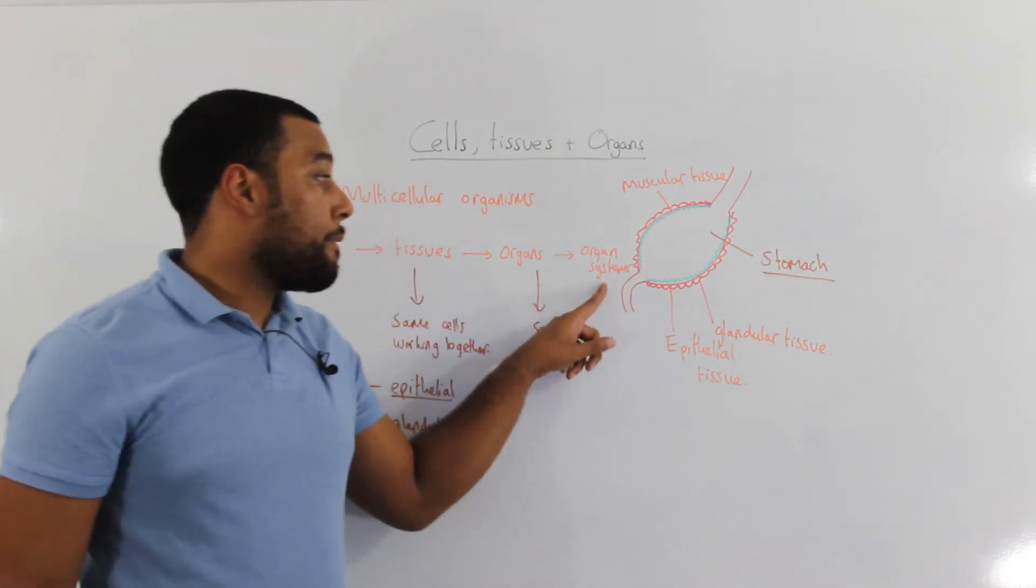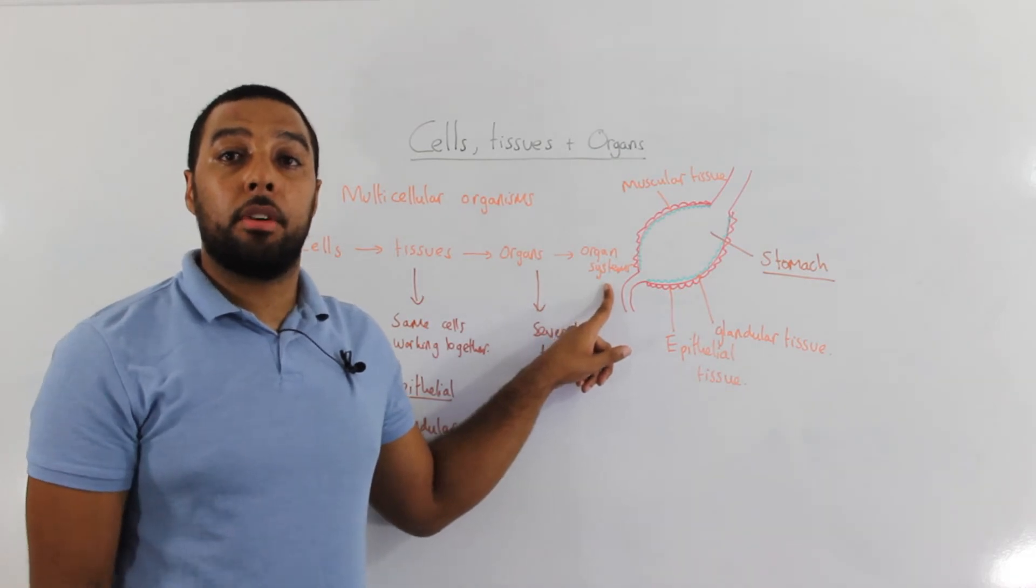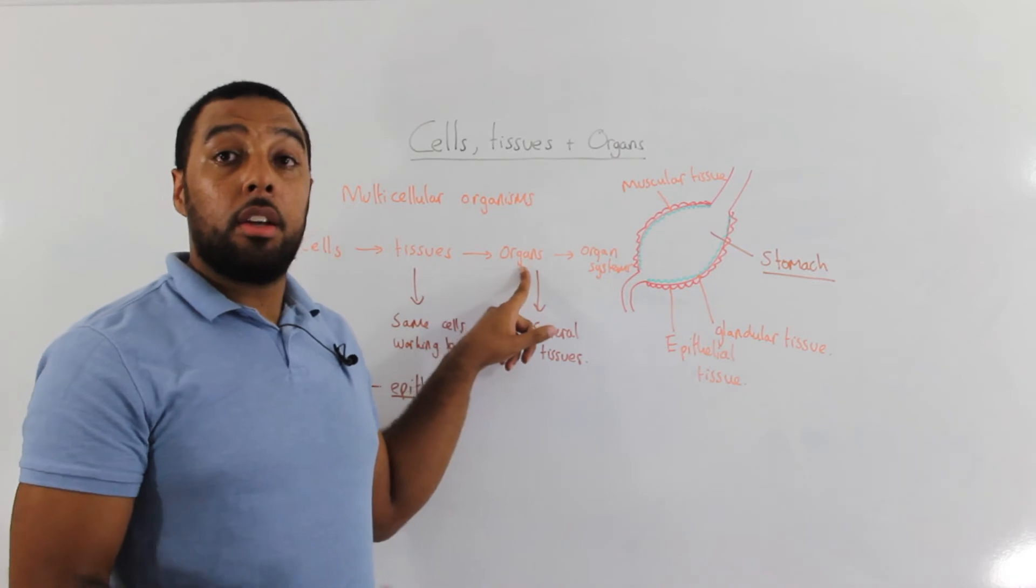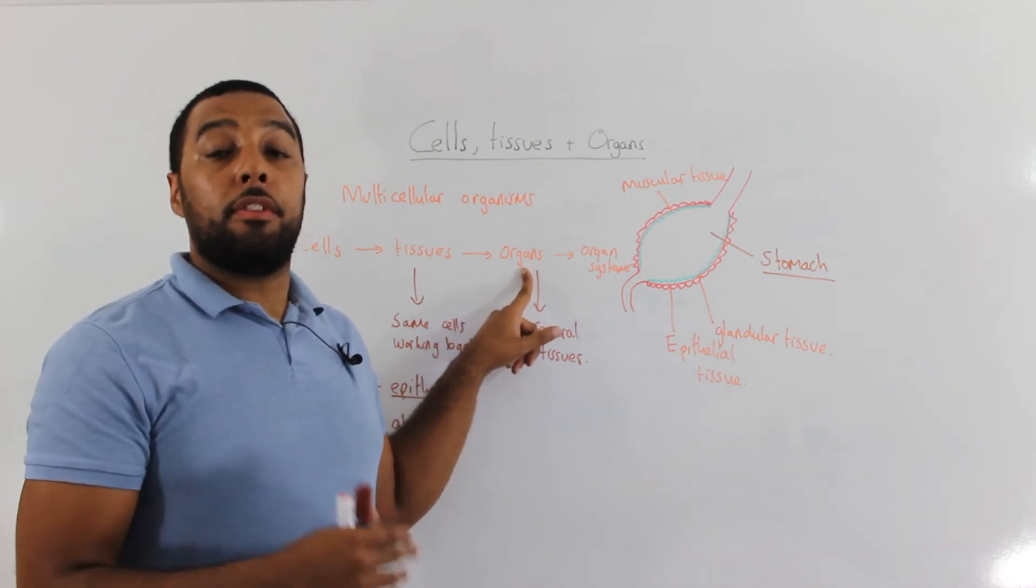For example, we have a digestive system. The digestive system consists of the small intestine, the large intestine and the stomach.